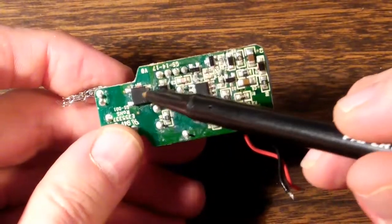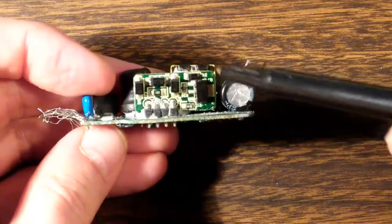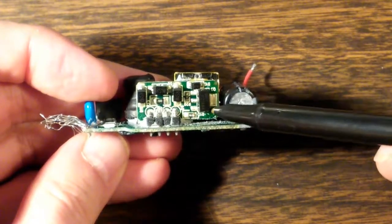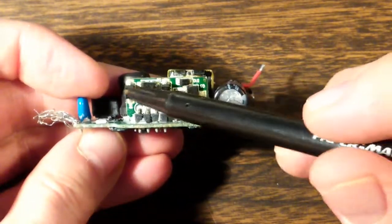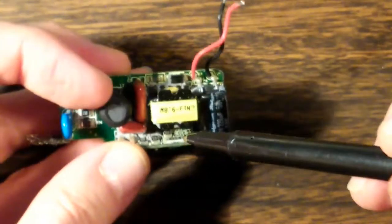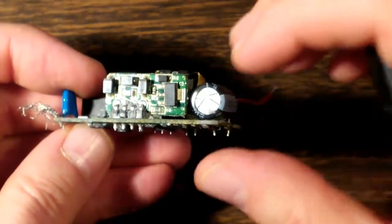From the output of this full wave rectifier goes into this daughter board here. Not sure exactly what it's doing. A bunch of big diodes, a big old transistor, some other things on the back. I'm guessing that's some sort of a voltage regulator.